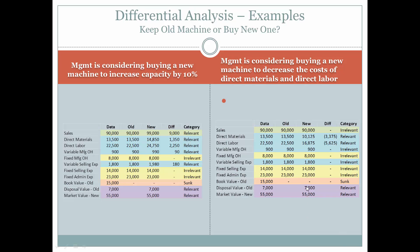The disposal value of the old machine would be relevant if we acquired the new machine because we would be selling the old one, and the market value of the new machine would also be relevant. When doing a presentation to management, you would show what's different and what remains the same so that management knows you have considered everything in your analysis.